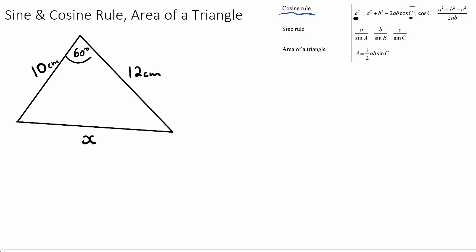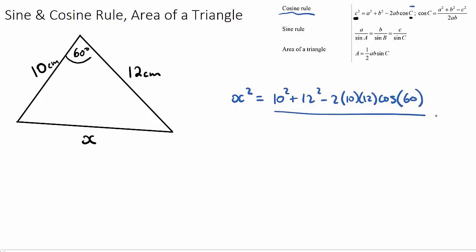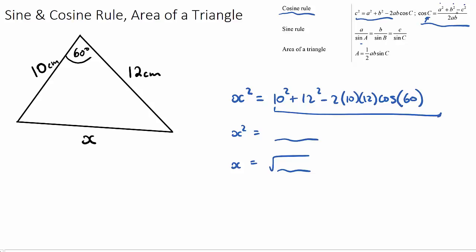For our example, let's say the angle is 60 degrees and the two known sides are 10 and 12. We write: x squared equals 10 squared plus 12 squared minus 2 times 10 times 12 times cos of 60. Type this into the calculator, get a number for x squared, then take the square root. The second cosine rule — rearranged — is useful when you have three side lengths given and want to find an angle.